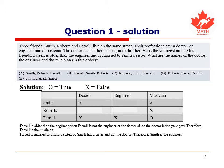And since Smith is neither the doctor or the musician, Smith has to be the engineer. And if Smith is the engineer, and Farrell is the musician, then Roberts is the doctor. Therefore, the answer to this question is C.